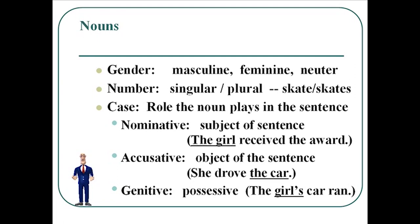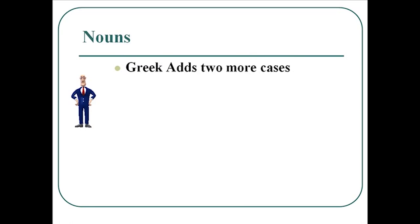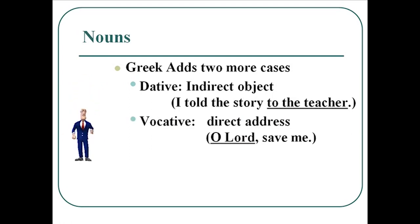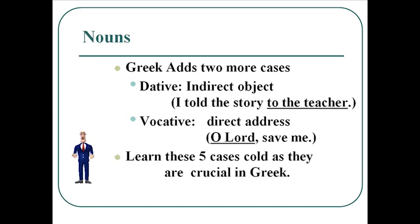Keep your eye on these cases because they'll give us trouble in the first few weeks, and they are extremely important. Greek will add two more cases to the nominative, accusative, and genitive. The dative case will be the case of the indirect object — in English we would say I told the story to the teacher, where to the teacher is the indirect object and would be in the dative case. The vocative is the case of direct address — in English we would say O Lord, save me, where O Lord is a direct address and would be in the vocative in Greek. You should learn these five cases cold because this will be a difficult point when we get to chapter four and first jump into the nouns.